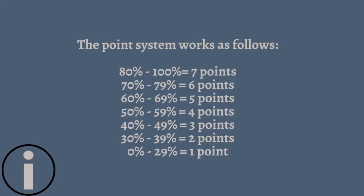This is how the point system works: 80 to 100 percent is 7 points, 70 to 79 percent is 6 points, 60 to 69 percent is 5 points, 50 to 59 percent is 4 points, 40 to 49 percent is 3 points, 30 to 39 percent is 2 points, and 0 to 29 percent is 1 point.